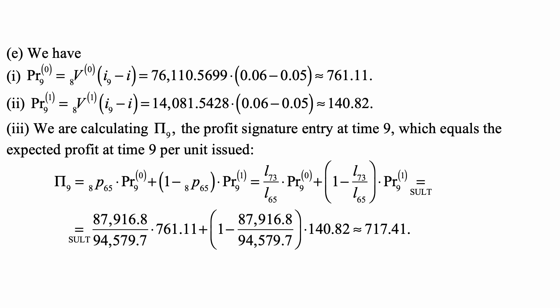Remember, in state 1 the person insured, the annuitant, is dead. But the annuity payments continue because it has a 10-year certain. Now all of these numbers are given, and we do the calculation that comes out to be approximately 717.41.